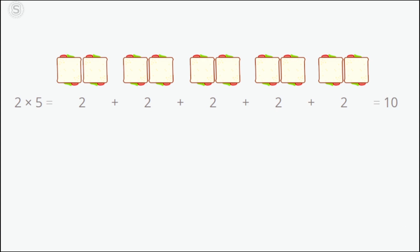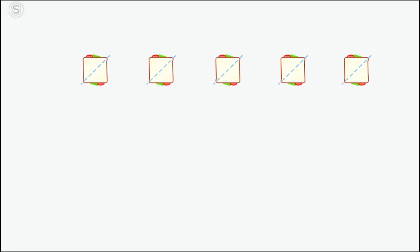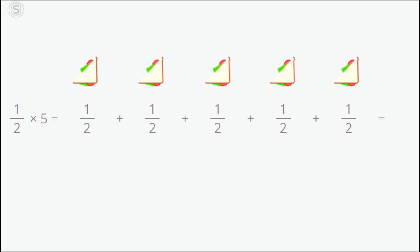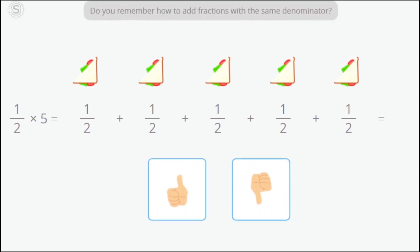Zoe thinks that two sandwiches each is too much food, and it would be better to make half a sandwich for each person. Just like before, we can see the multiplication problem as a repeated addition problem. Do you remember how to add fractions with the same denominator?